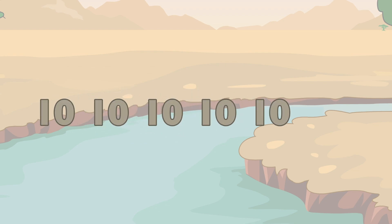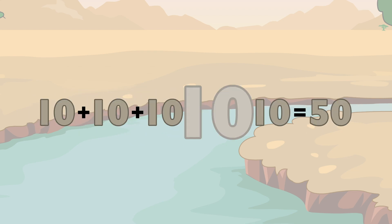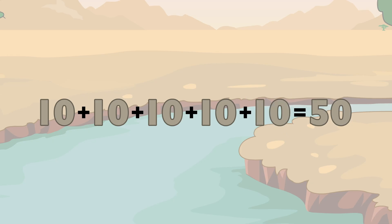Five tens equals fifty. One, two, three, four, five tens equals fifty.